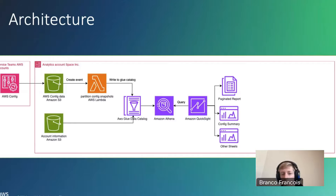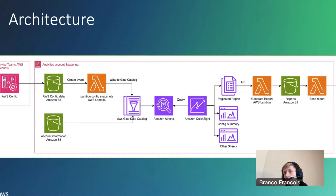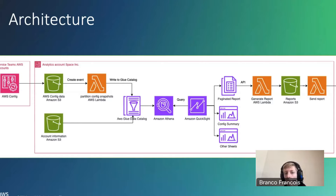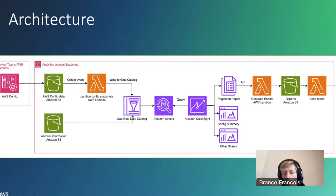Most importantly, we have the paginated report — more like a PDF document with visualizations — that we will send out to, for example, developers or application coordinators in Space Inc. We could use a Lambda function which calls the QuickSight API to generate a report dedicated to one service. For example, I want the report about the Nova application, and then we can store it in an S3 bucket and send out this report using another Lambda function to the service coordinator of an application or one of their developers.